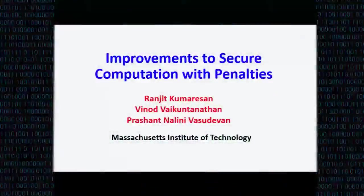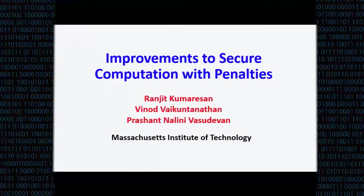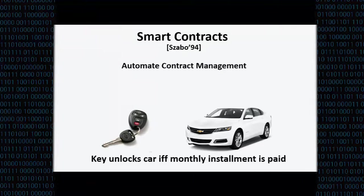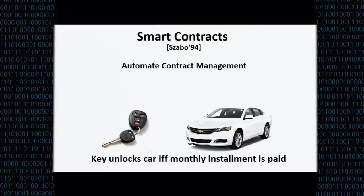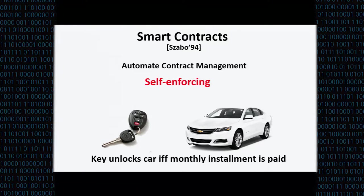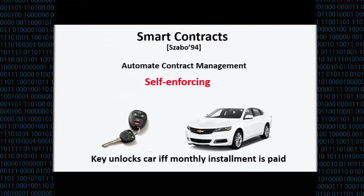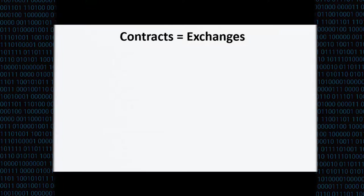How to improve secure computation with penalties. I was going to start by talking about smart contracts, but the previous session was all about smart contracts. What are smart contracts? They are self-enforcing contracts — contracts that provide guarantees that if thing A happens, then thing B happens. We are going to be interested in a specific kind of contract which is exchanges: the concept of fair exchange.